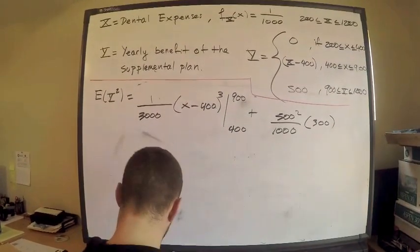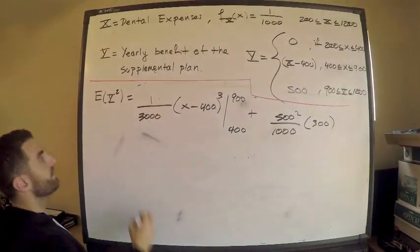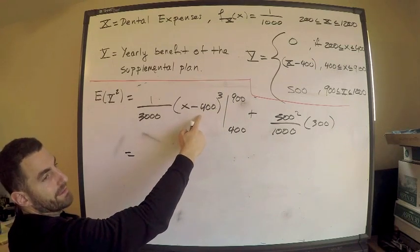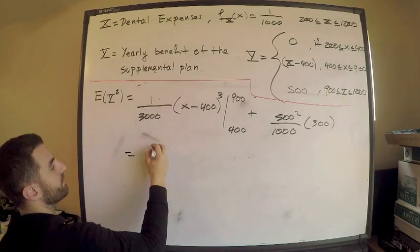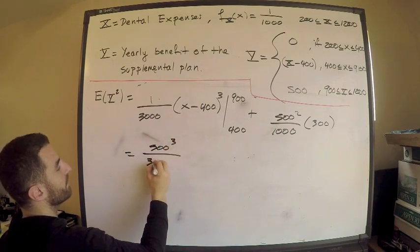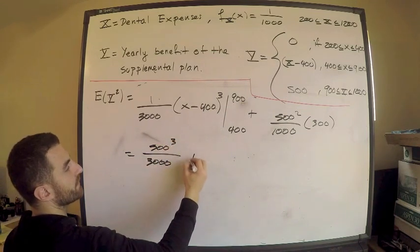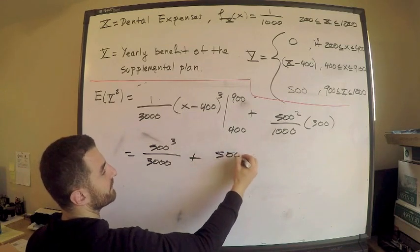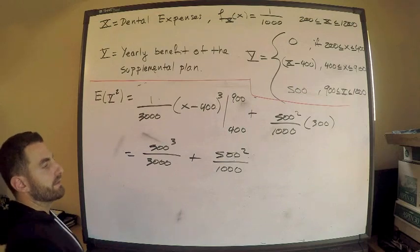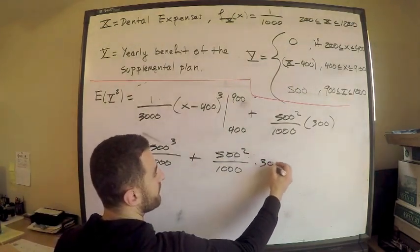Let's just simplify this and we're done. Pretty much there. This is equal to, again, when I plug in 400, I get zero. So this just gives me, when I plug in 900, which is 500 cubed. So this is 500 cubed over 3,000 plus 500 squared over 1,000. That looks good. That looks good. Times 300.